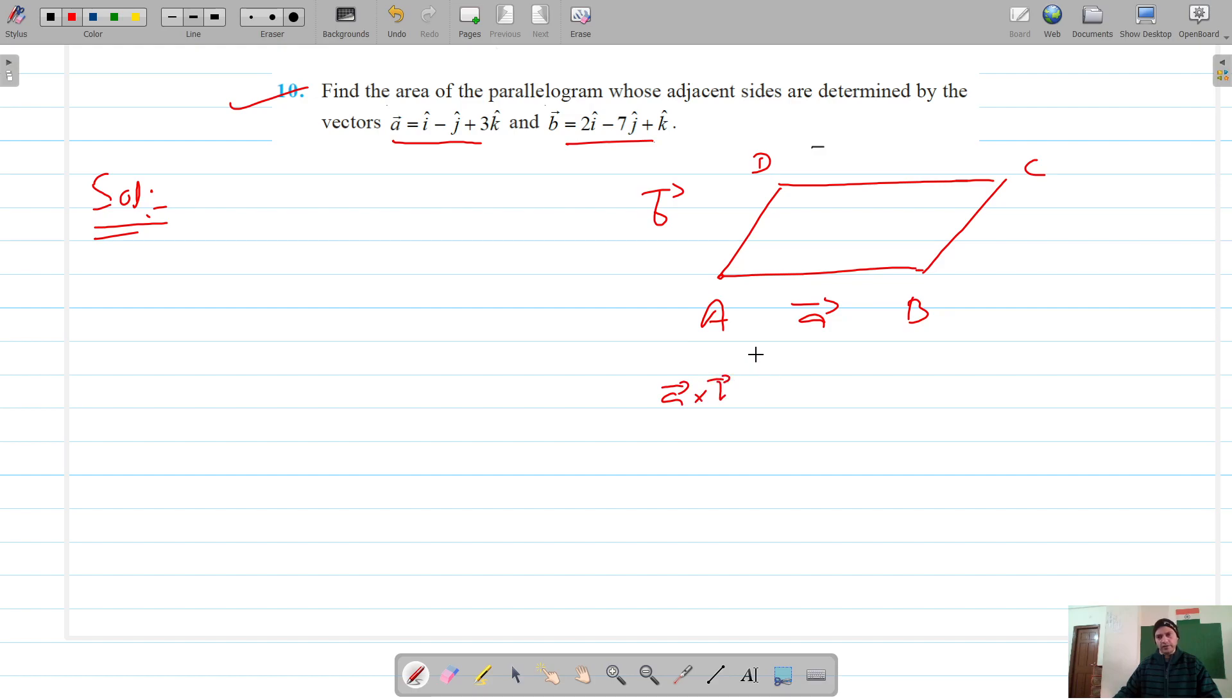to get the cross product of these two vectors and multiply its magnitude by half, we get the area of this triangle. The parallelogram is divided into two triangles of equal areas by this diagonal, so if we multiply by two, the area of the parallelogram should be the magnitude of a cross b.